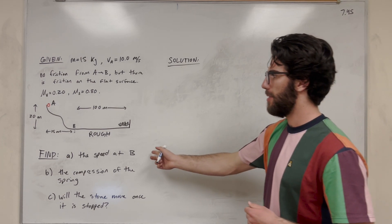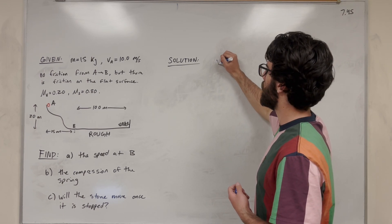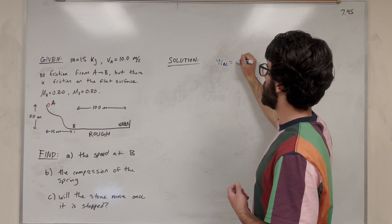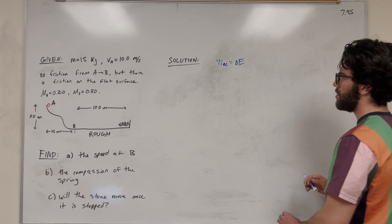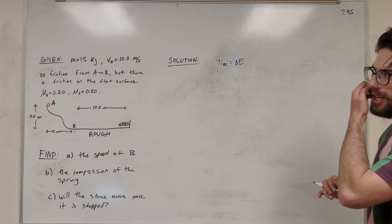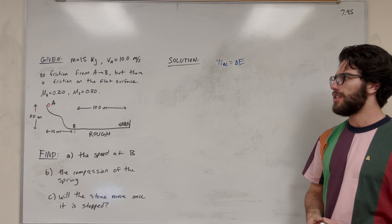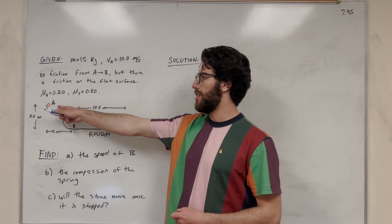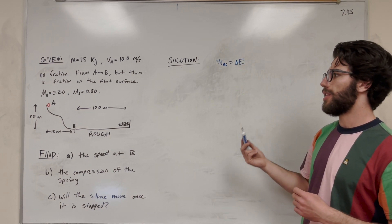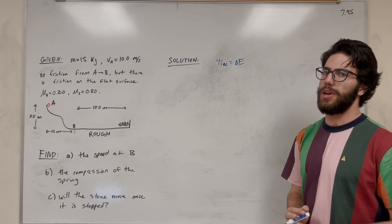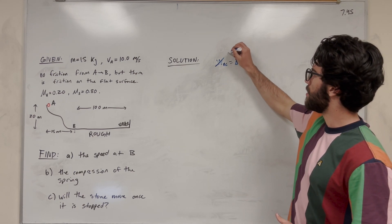For part A, we're finding the speed at B. We're going to use the work-energy theorem, which says that non-conservative work is equal to the change in energy. Non-conservative work is any work put in or taken out of the system — typically friction or air resistance. However, we know there's no friction from A to B, and we're not accounting for air resistance or any energy being put into the system, so we're going to set that equal to zero.